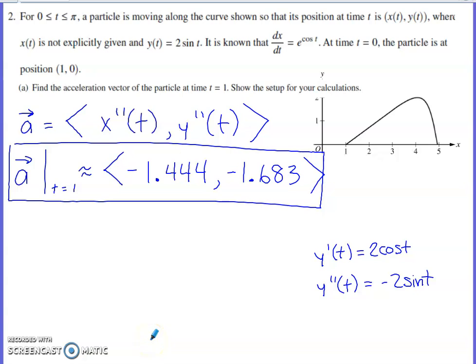This will be a discussion of number two from the 2023 AP Calc BC exam, and this question involves parametric equations. So they say on the interval zero to pi, we've got a particle moving along a curve, position at time t is given by x of t, y of t, so both x and y depend on t.